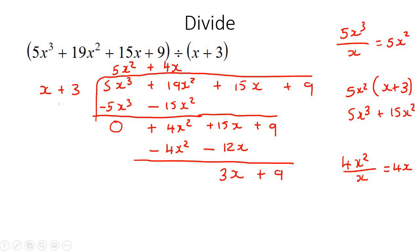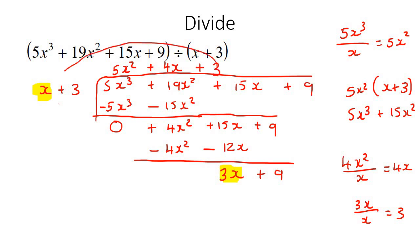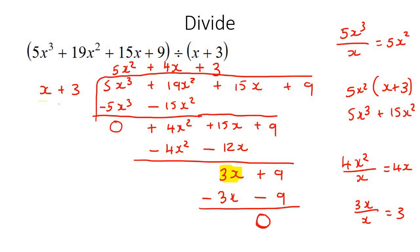We start the process again. The largest power here is x, and over here is 3x, so dividing gives us 3. We put plus 3 at the top, then take 3 and multiply it with the whole part, giving 3x plus 9. Switch the signs and add — it just becomes 0. So there is a remainder of 0, and the final answer is up at the top.